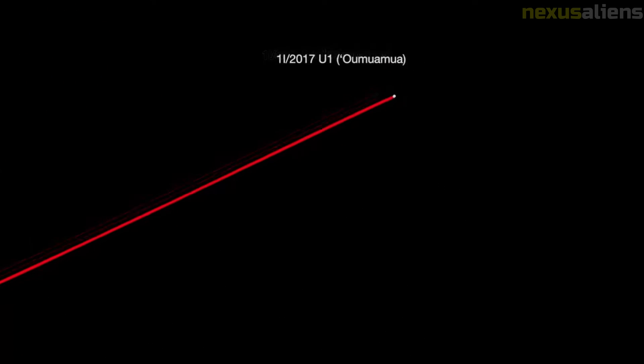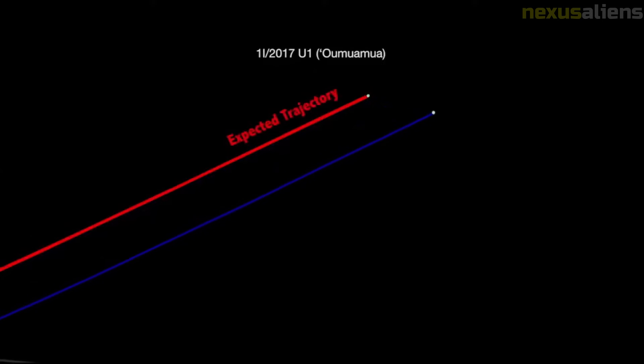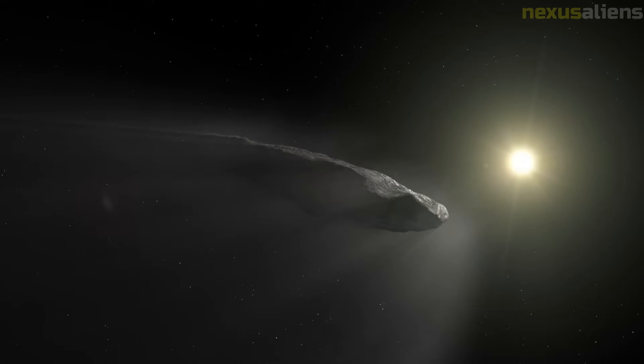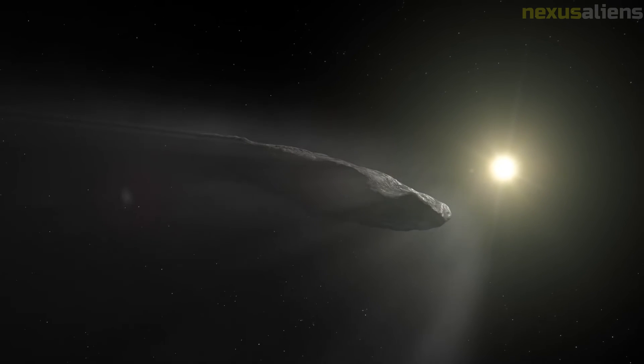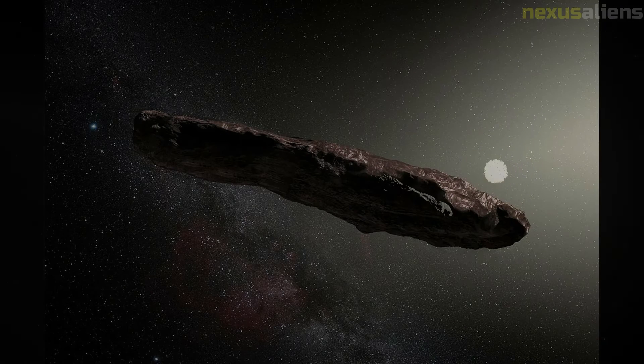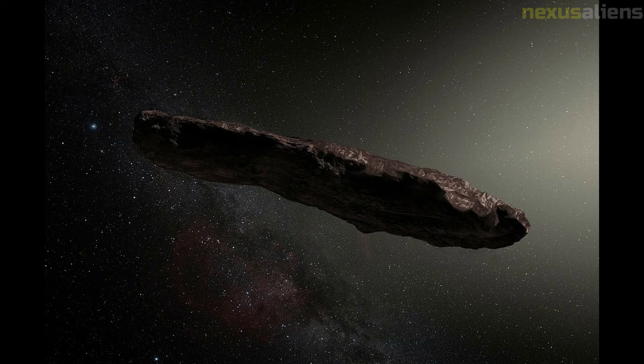Accordingly, the object was renamed A-2017 U1, becoming the first comet ever to be re-designated as an asteroid. Once it was identified as an interstellar object, it was designated 1I-2017 U1, the first member of a new class of objects.